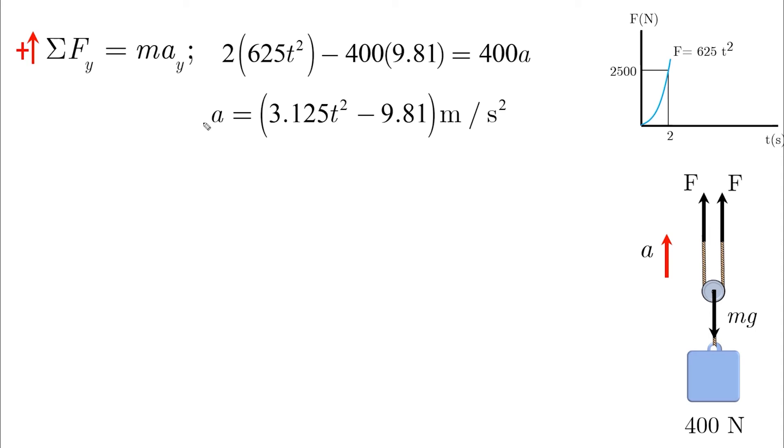To find the velocity after some time, we just need to use the acceleration definition, which is dv over dt. We take dt to the other side and integrate both sides. Remember that all we did in the last part was to find the initial conditions. When v0 equals zero, the time is 1.772 seconds. In other words, the block will start to move, will have its initial velocity when the time is 1.77 seconds.